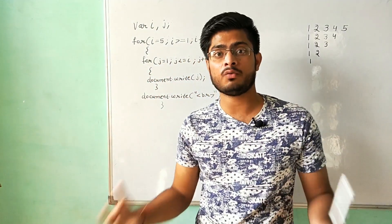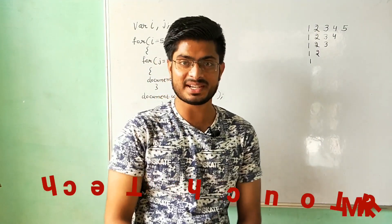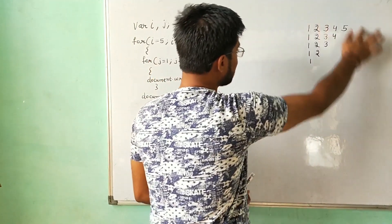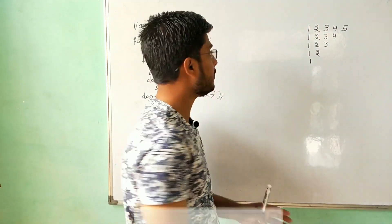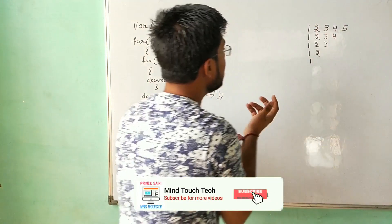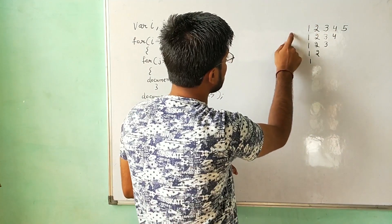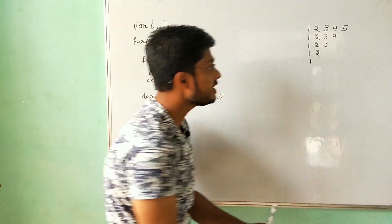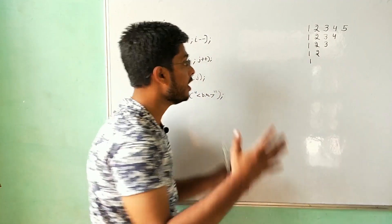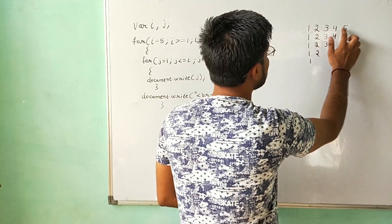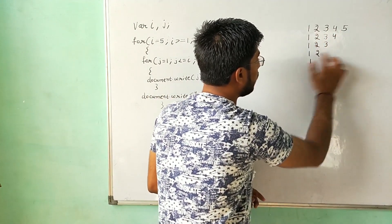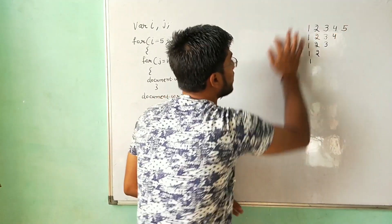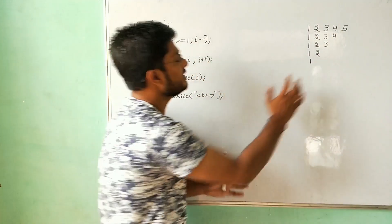Hello friends, my name is Prince and welcome again to the MindTouchTech YouTube channel. In this lecture we will study how to print a decreasing number pattern in JavaScript. In our previous lecture we studied the opposite pattern where numbers go from 1, then 1-2, then 1-2-3, up to 1-2-3-4-5. But here our pattern is totally opposite — we first have 1-2-3-4-5, then 1-2-3-4, then 1-2-3, then 1-2, and finally 1. The pattern is decreasing, in decrementing order.